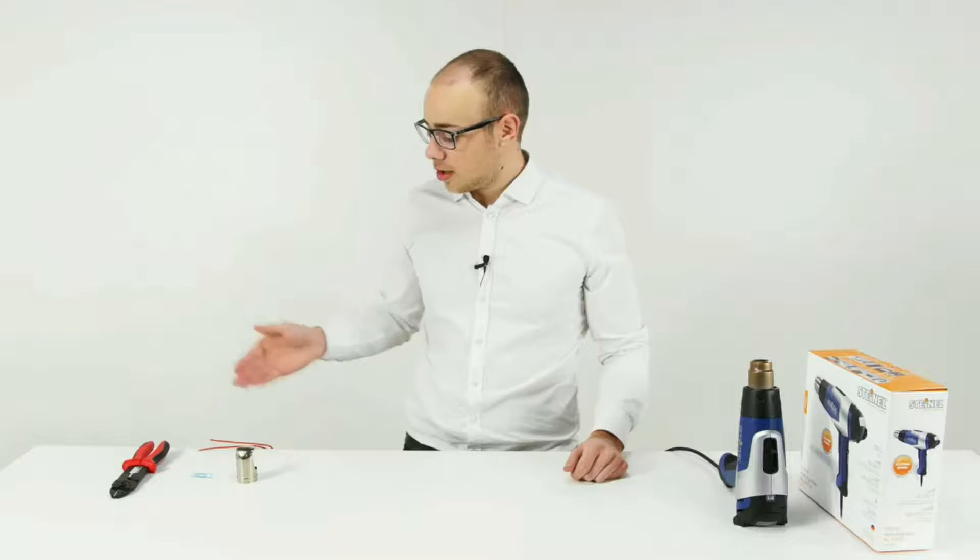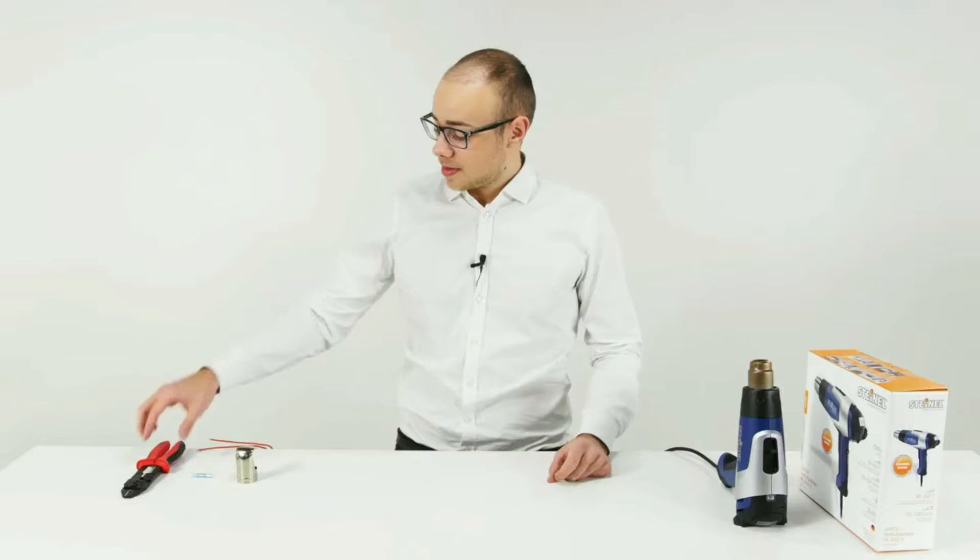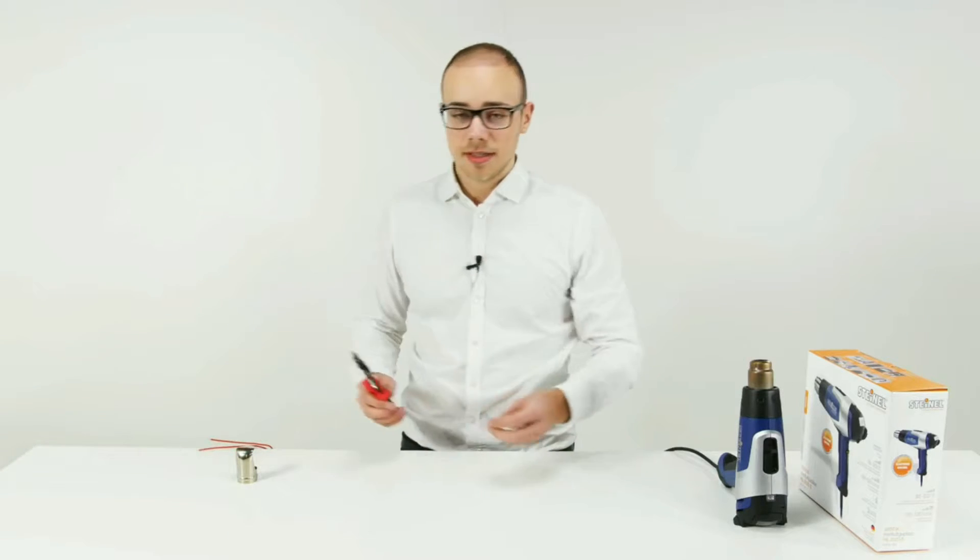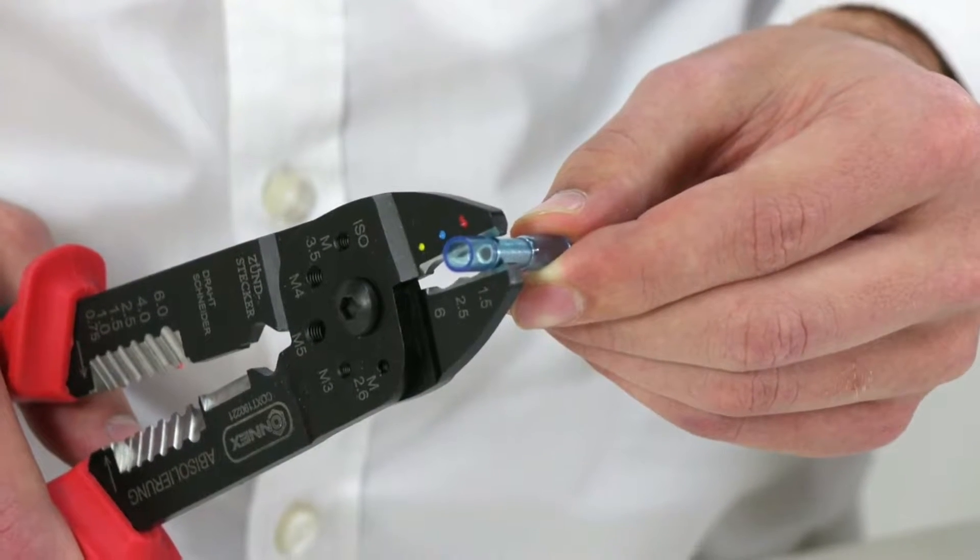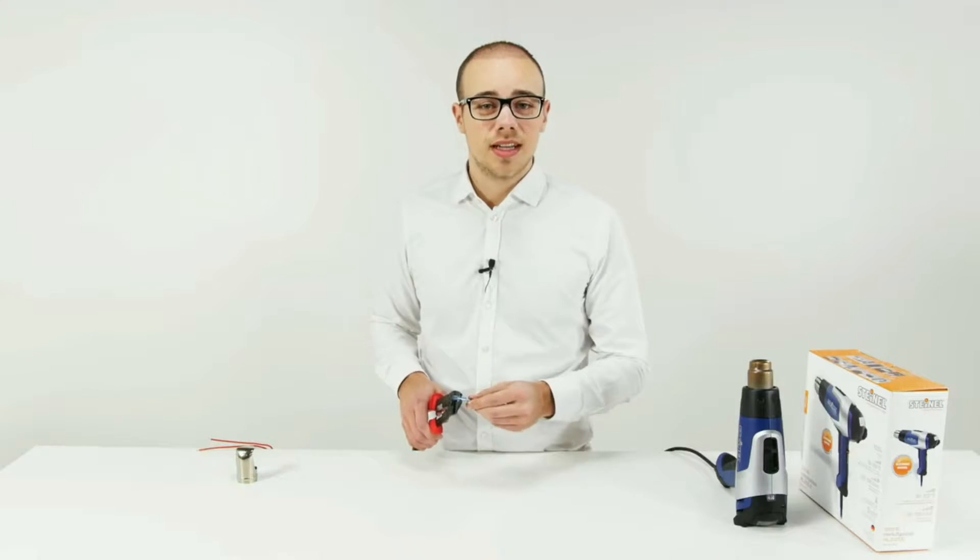You can see the Steiner heat gun and the accessories we'll be using for this demonstration. The connector is taken and pressed using a crimp tool.